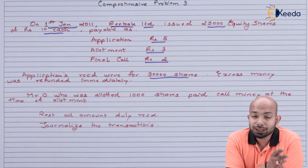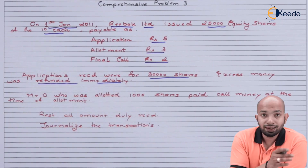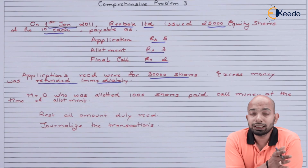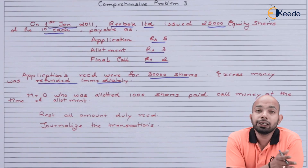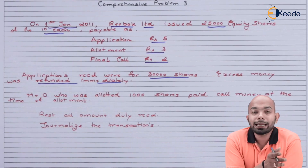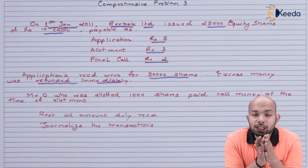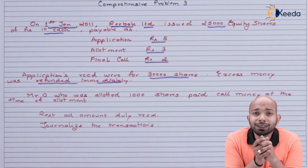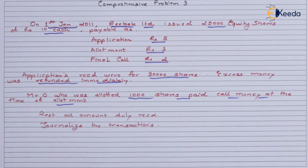Excess money received was refunded immediately. Mr. D, who was allotted 1,000 shares, paid the final call money along with the allotment money at the same time. Instead of paying 3 rupees per share on allotment, he paid 5 rupees per share — giving an additional 2,000 rupees in advance for the call which hadn't been made yet.